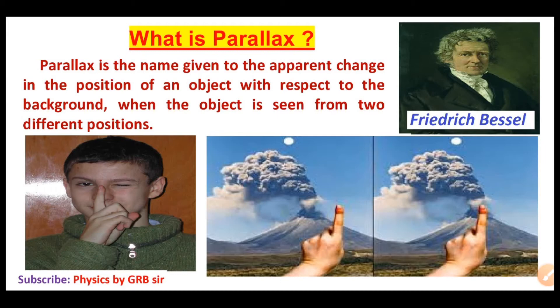What is Parallax? First, the definition and explanation. Parallax is the name given to the apparent change in the position of an object with respect to the background, when the object is seen from two different positions. When you view one object from two different positions, the object's position will change slightly. That apparent change is called Parallax.